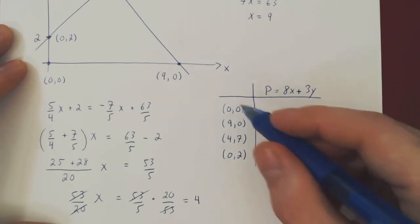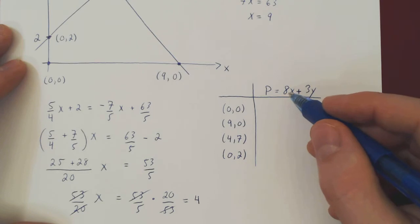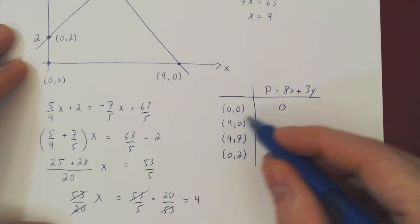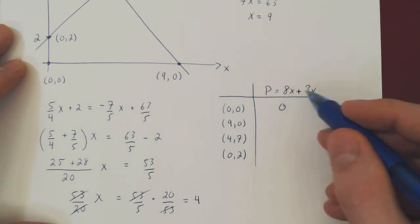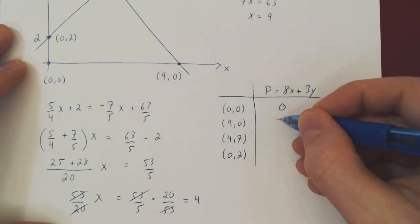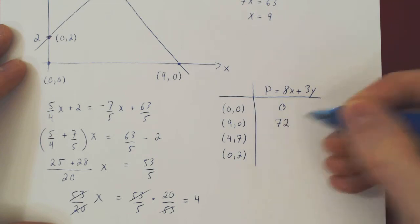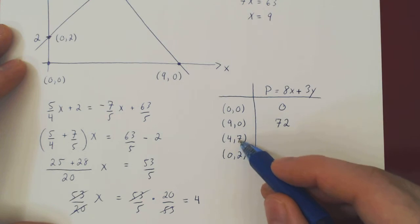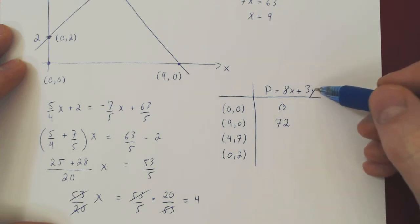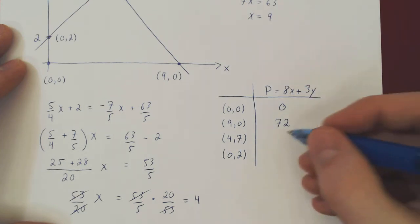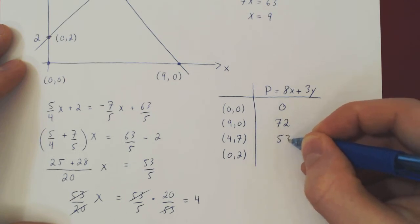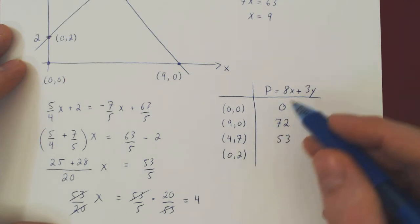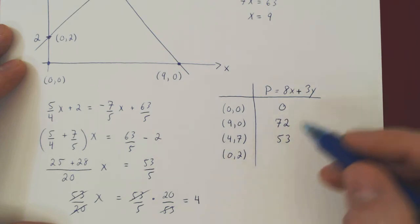Let's evaluate. x is 0, y is 0, so 8 times 0 plus 3 times 0 is 0. 8 times 9 is 72 plus 0, so we get 72. 4 times 8 is 32 plus 7 times 3 is 21, 32 plus 21 is 53. And finally, 8 times 0 is 0 plus 2 times 3 is 6.